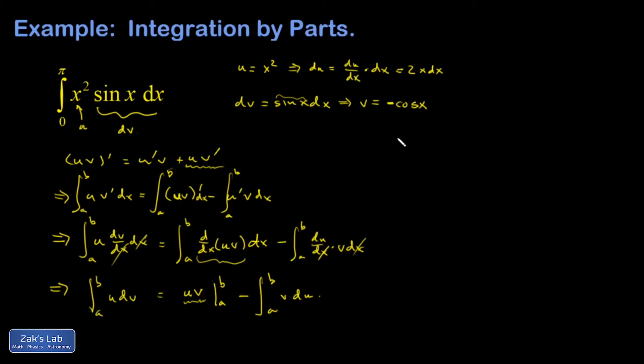So my original integral, the integral from 0 to pi, x squared sine x dx, is going to be given by uv, so negative x squared cosine x evaluated from 0 to pi, minus the integral from 0 to pi of v du. So v is negative cosine x. I'm going to pull out the minus sign, put the cosine x there, and then du is 2x dx. I'm going to pull the 2 out in front while I'm at it. And again, I had an x there.